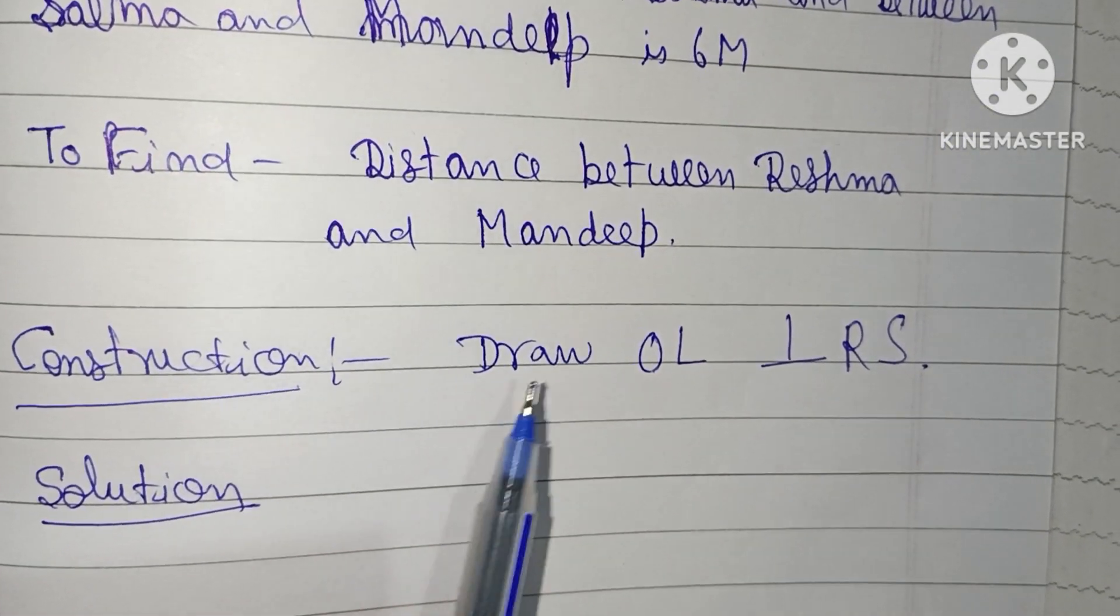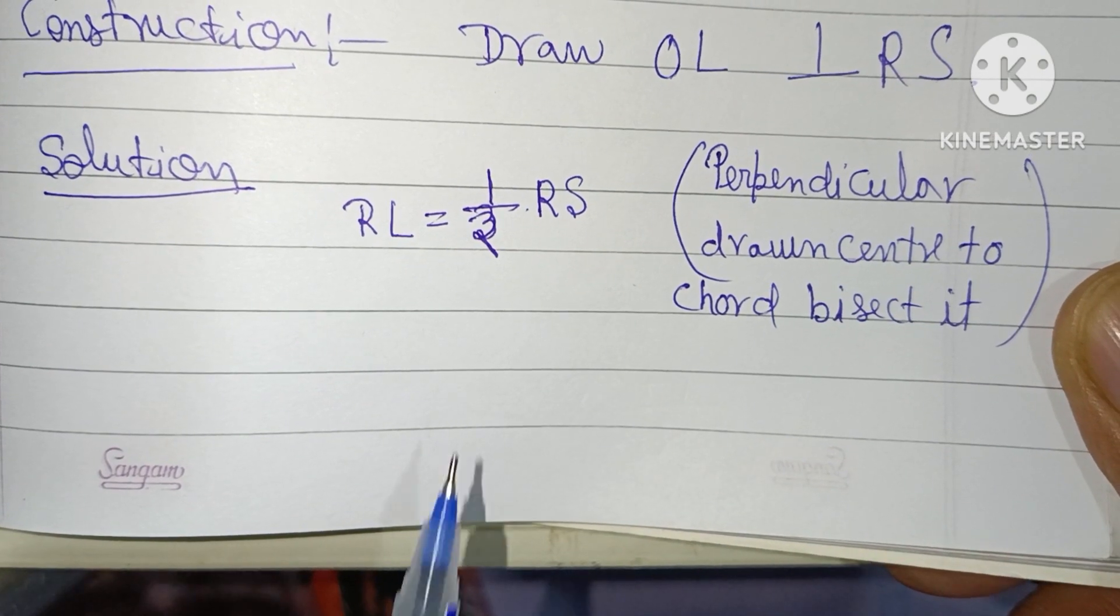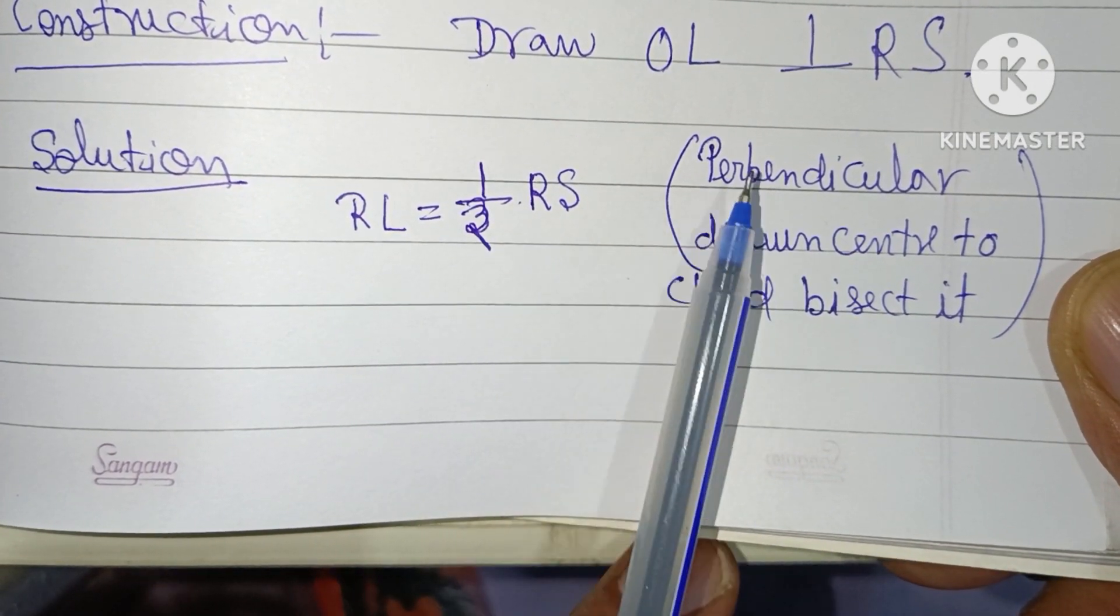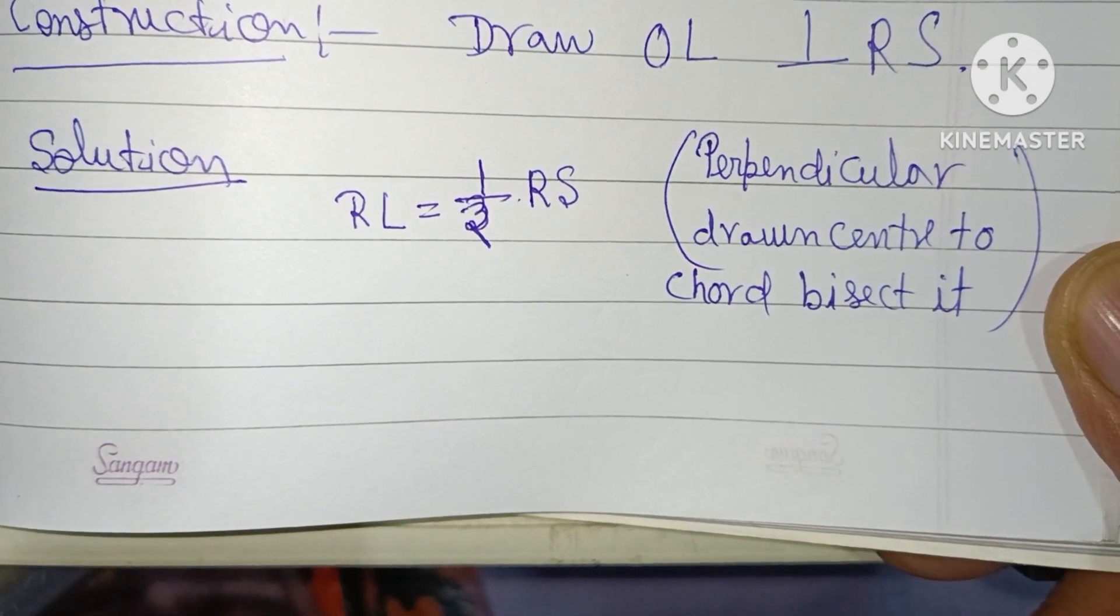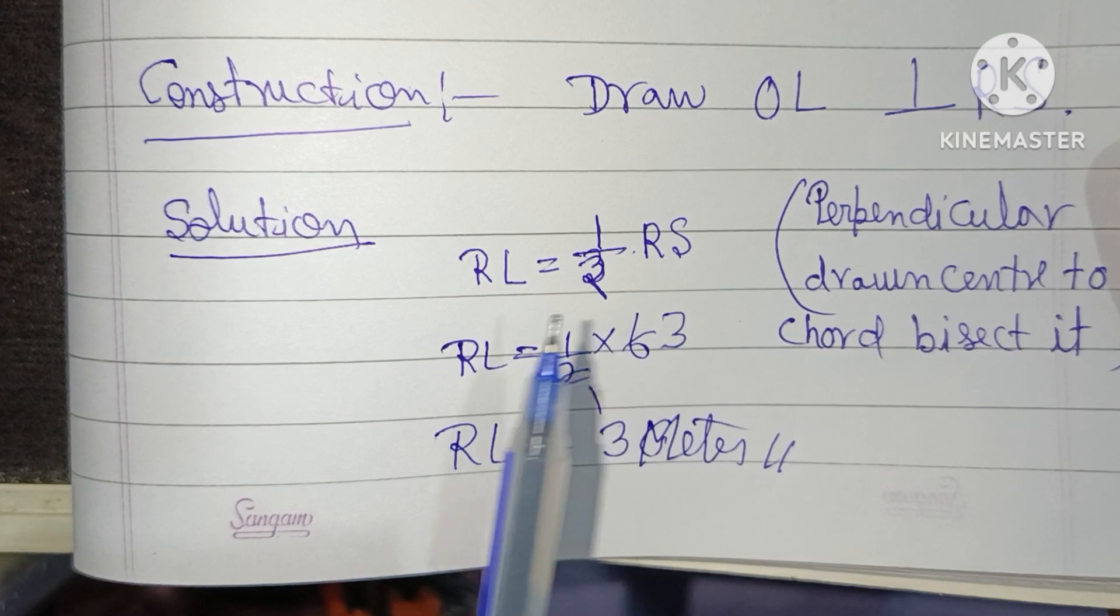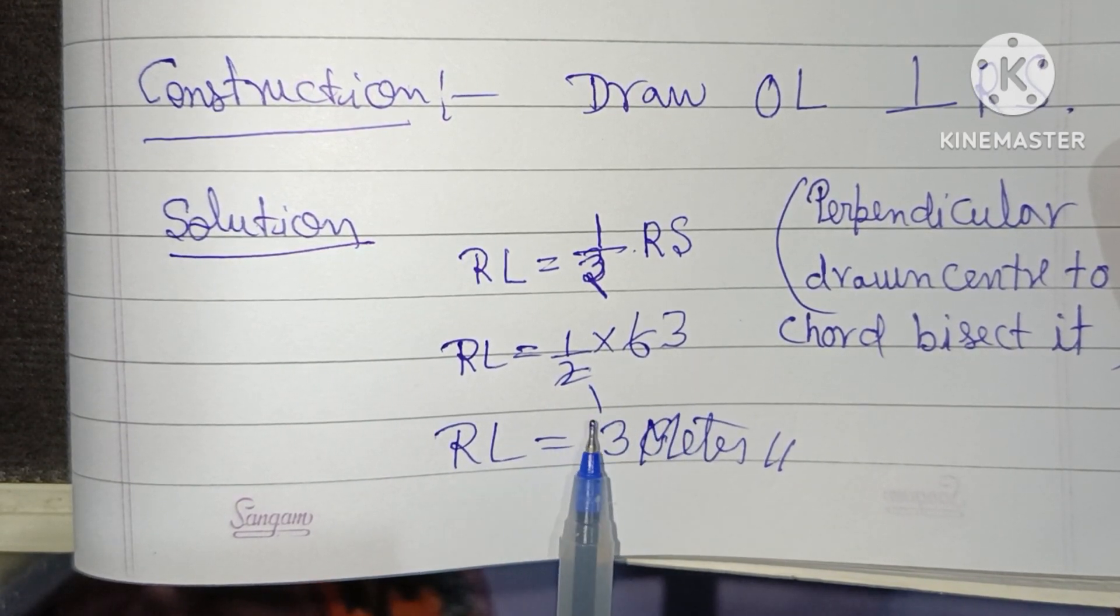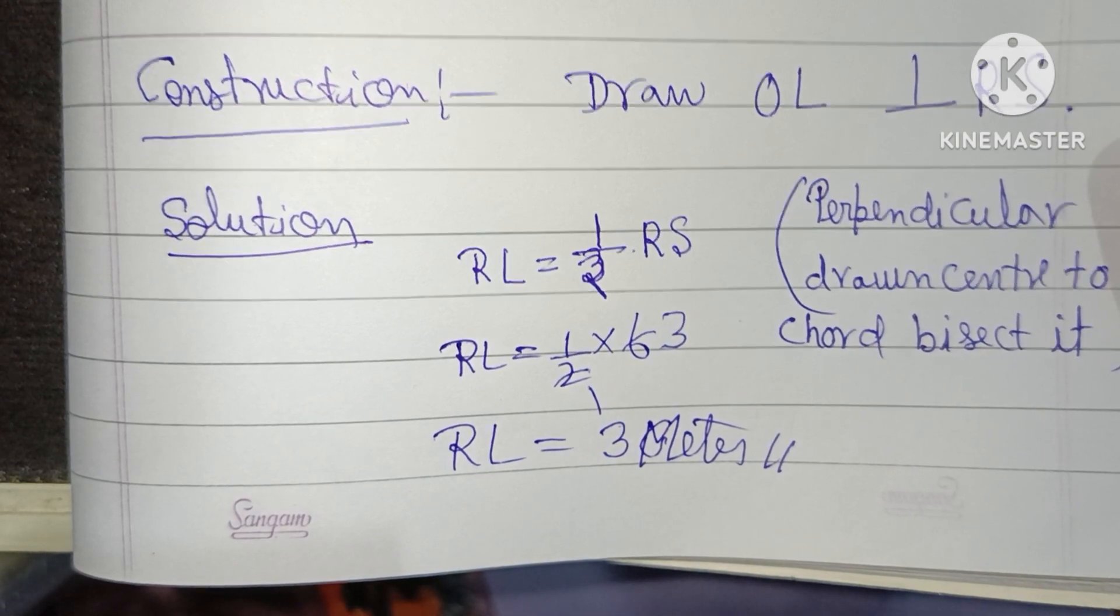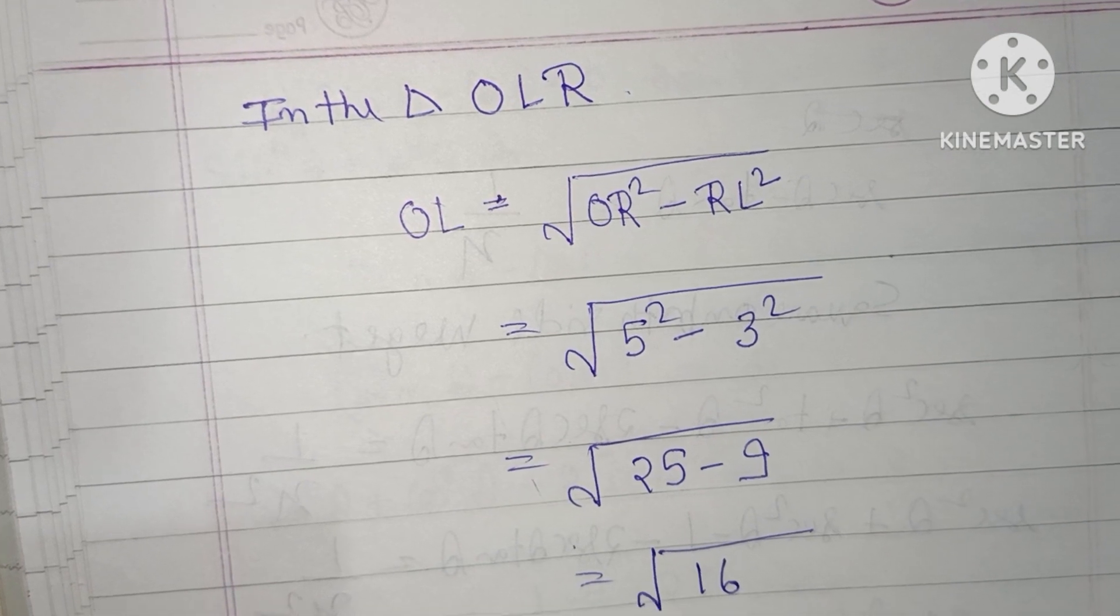For construction, we draw OL perpendicular to RS. RL equals one-half RS because a perpendicular drawn from center to chord bisects it. So RL equals one-half into 6, which is 3 meters.